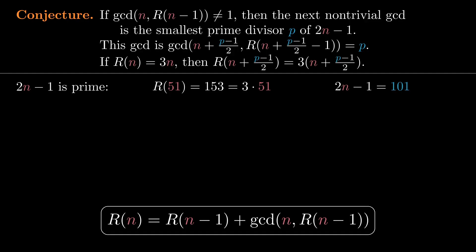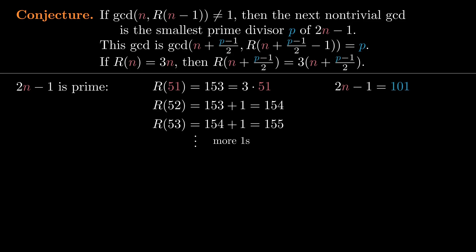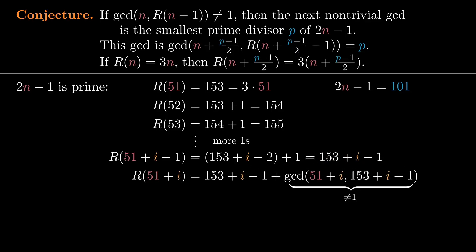Let's see what the next few terms are after R(51). Using the recurrence, the next term is 153 plus the GCD of 52 and 153. This GCD is 1, so R(52) is 154. The next GCD is also 1, so R(53) is 155. As long as the GCDs continue to be 1, the terms will go up by 1 at each step. So i minus 1 steps later, R(51 + i − 1) will be 153 + i − 1. Suppose that's the last GCD that is 1 before we see a non-trivial GCD on the next step.